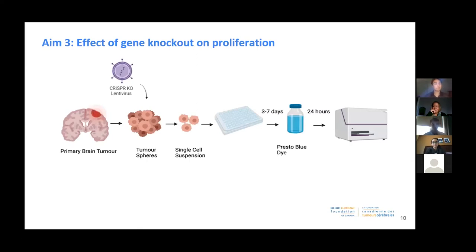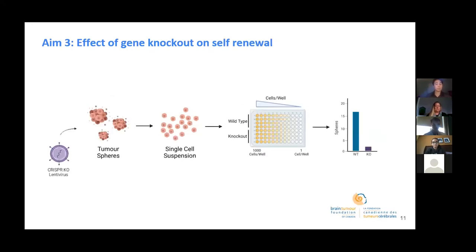We're first going to start off with a proliferation assay, which assesses the effects of the gene knockouts on cellular growth. Both lung and brain tumors will be dissociated, plated in a 96-well dish, and expanded. A detection dye will be added to each well to determine cell proliferation. Following this proliferation assay, we'll do a limited dilution assay, which will determine the effect of the gene knockouts on self-renewal and stemness of these cells. To do this, increasing densities of cells will be plated and allowed to grow before quantifying the amount of spheres formed in wild-type and knockout cells. The importance of this assay is to determine the stemness of the cancer stem cells in the tumors.